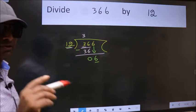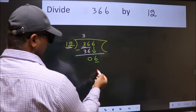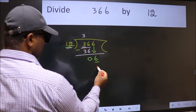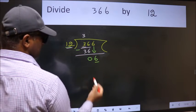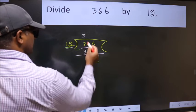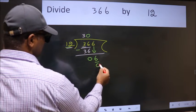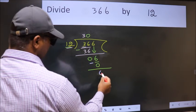Instead of that, what we should think of doing is which number should we take here. If I take 1, we will get 12. But 12 is larger than 6, so what we do is we take 0 here. So 12 into 0, 0. Now we subtract. We get 6.